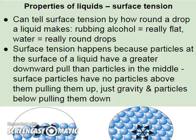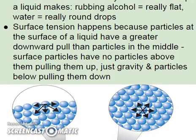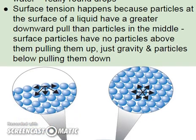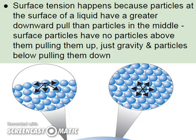Another property of liquids is surface tension — the tension on the surface of a liquid, like a skin or cover. Think of how tight that skin is and how easily you can break through it. If you made droplets with water and rubbing alcohol and looked at them from the side, rubbing alcohol makes a really flat droplet while water makes very round drops. Since rubbing alcohol is non-polar and water is held together with hydrogen bonds, this explains why water has a much higher surface tension.